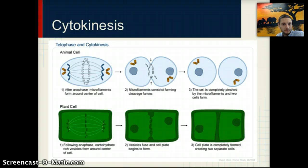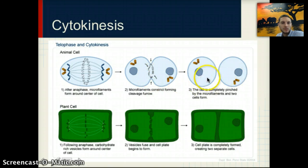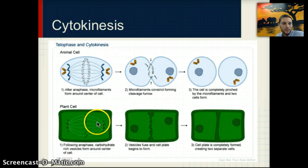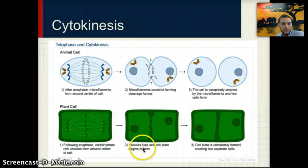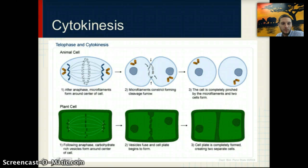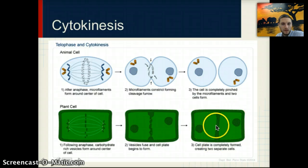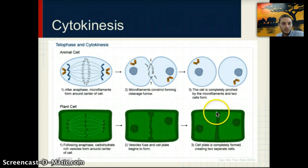In the animal cell, we can see where the cell begins to pinch in at the cleavage furrow until two separate cells are formed. In the plant cell, vesicles form around the center of the cell, then fuse as a cell plate begins to form. Once completely formed, the two new individual cells deposit cellulose along the equator to create a new cell wall between what was originally one cell.